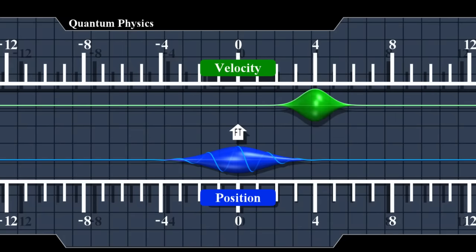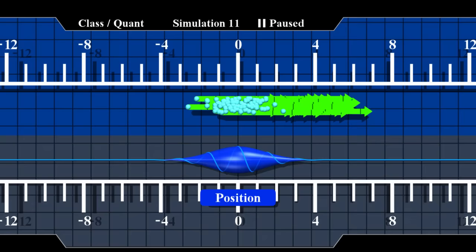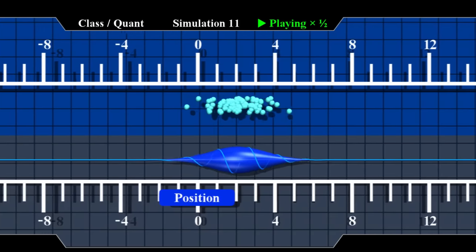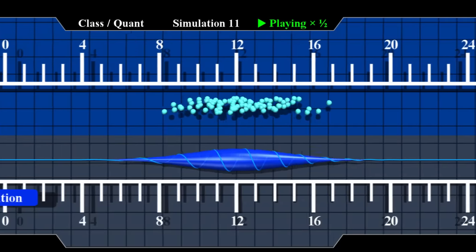This explains the spreading phenomenon we saw before. We'll demonstrate this using an example from classical physics. Here's a cluster of 100 particles. We distributed them horizontally, randomly, according to the position wave function. We'll now assign them with random velocities according to the velocity wave function. So some of them are a little faster than 4 units per second, and some are a little slower.